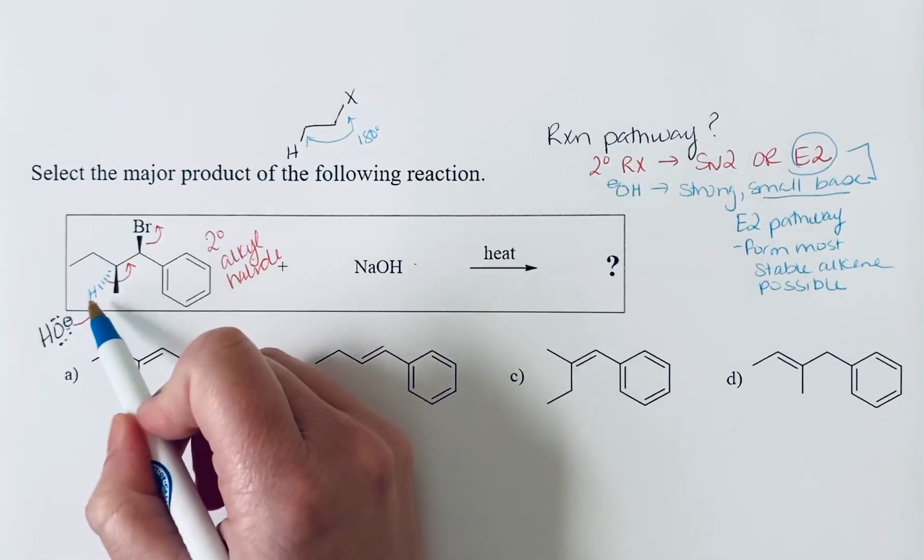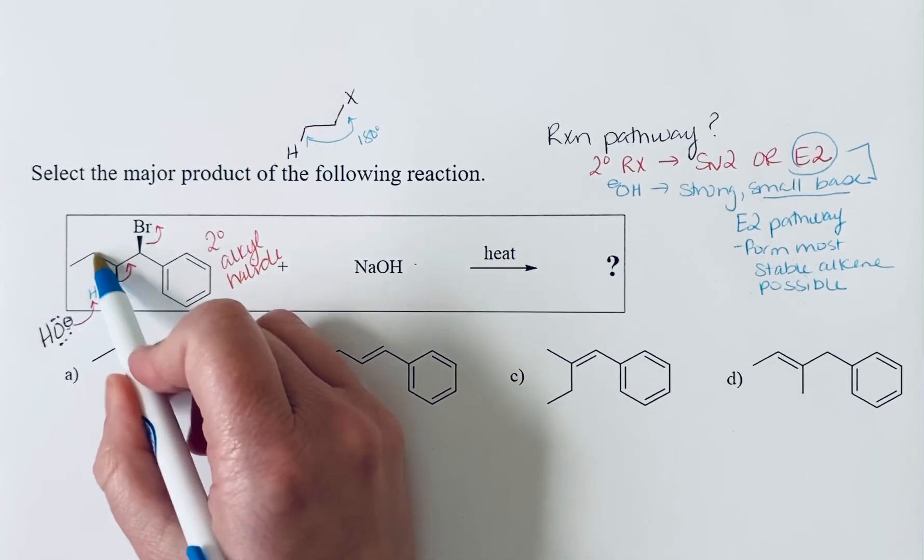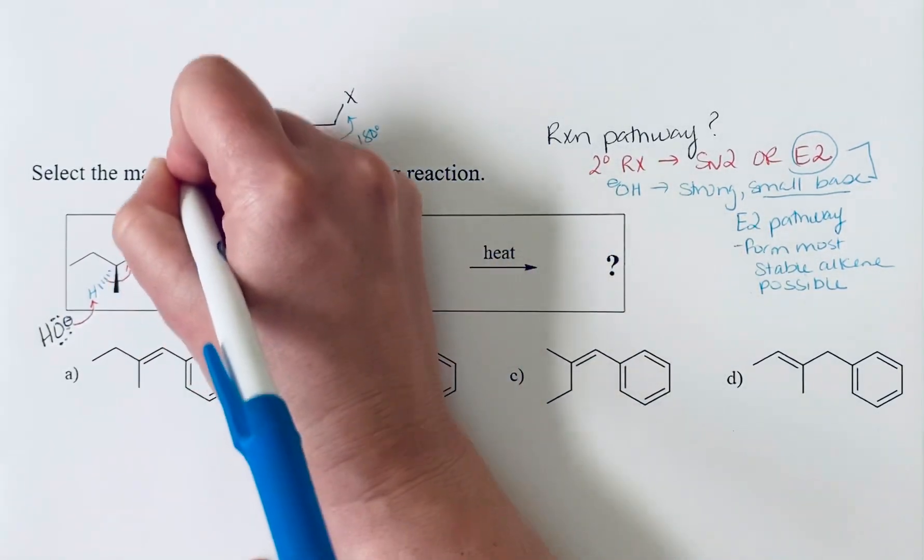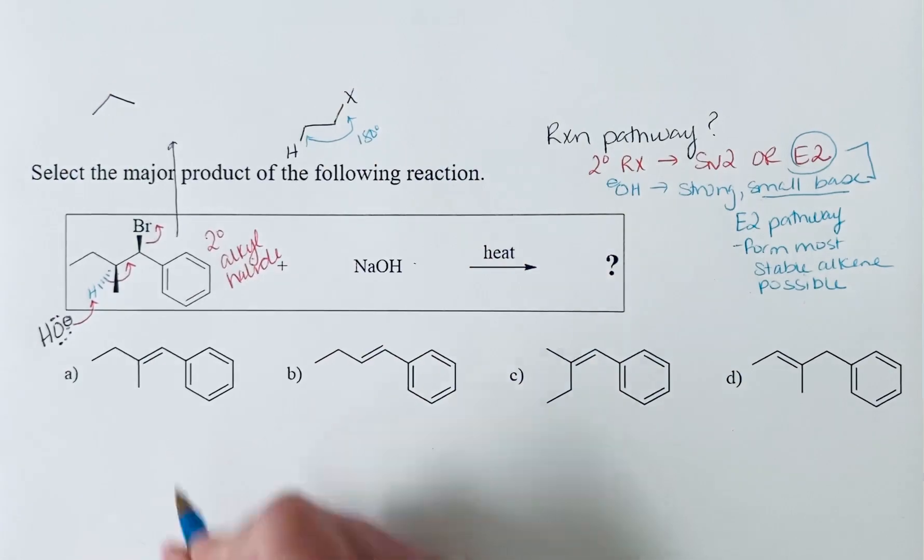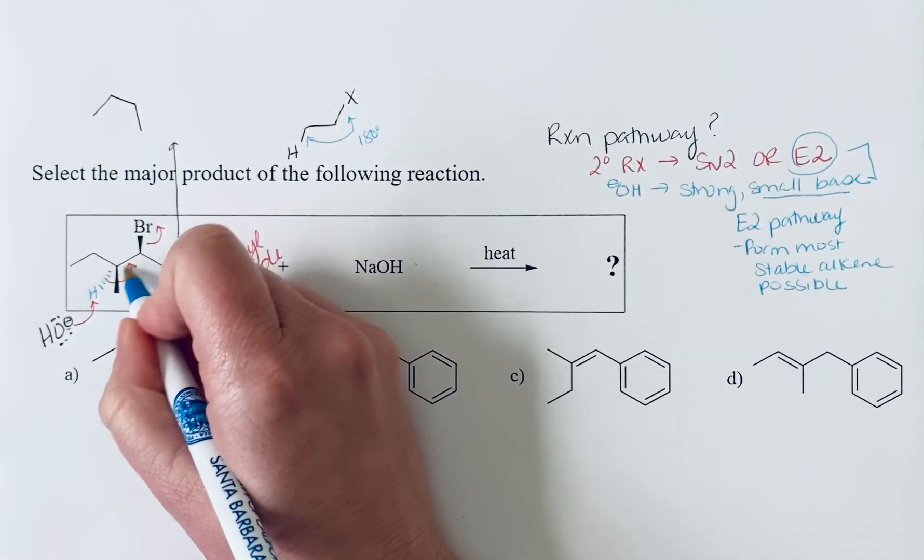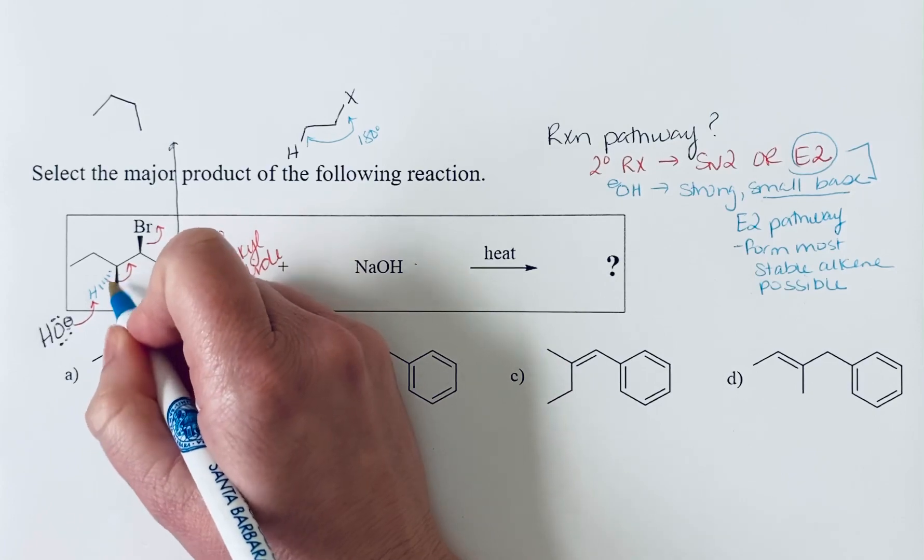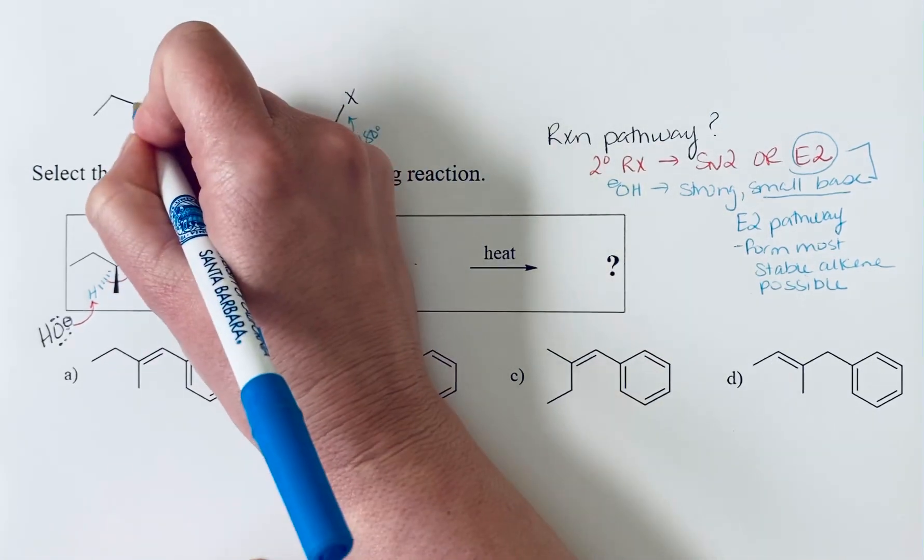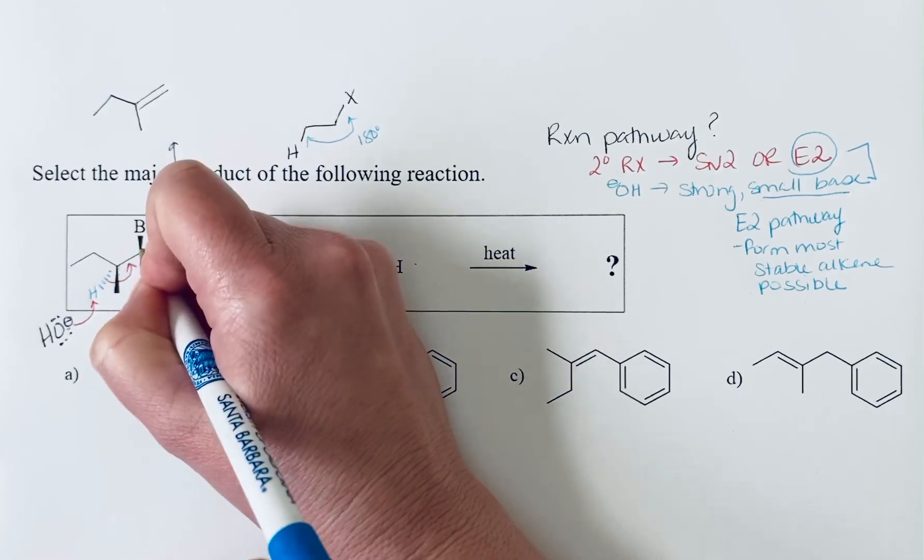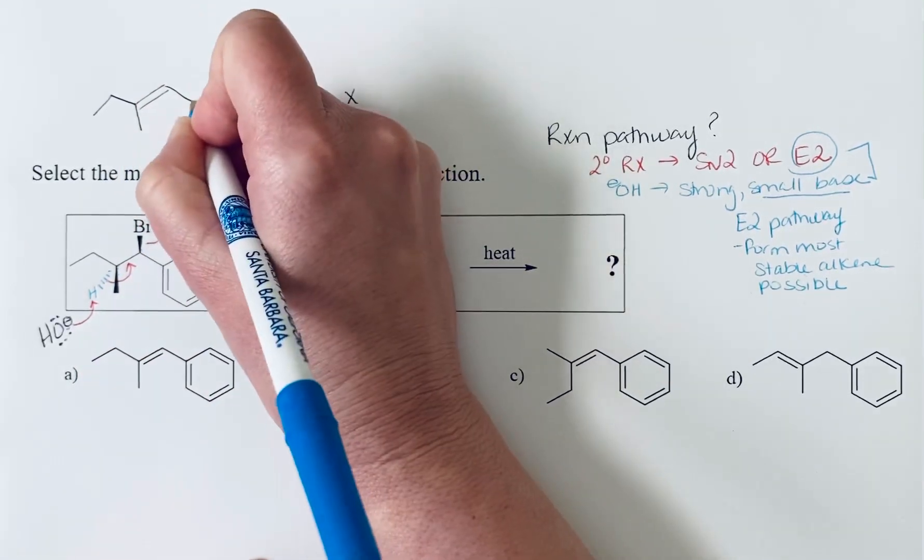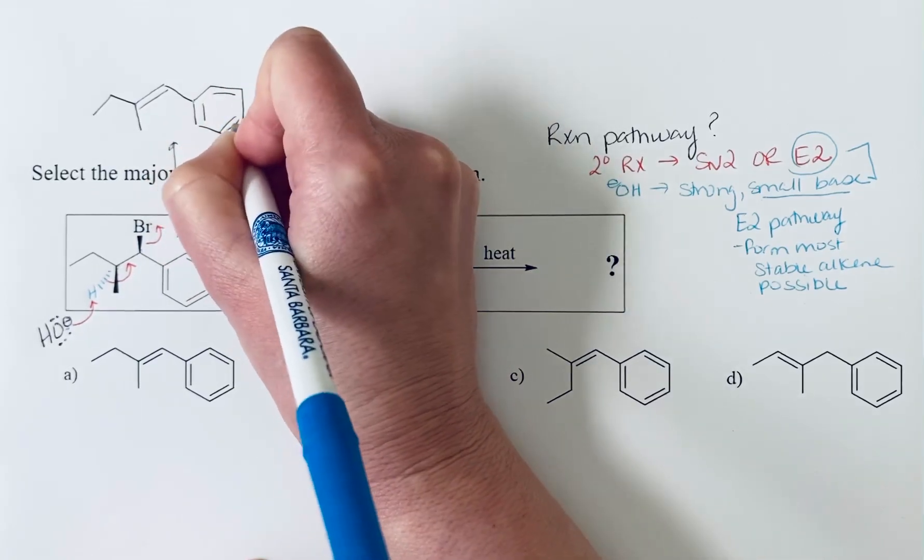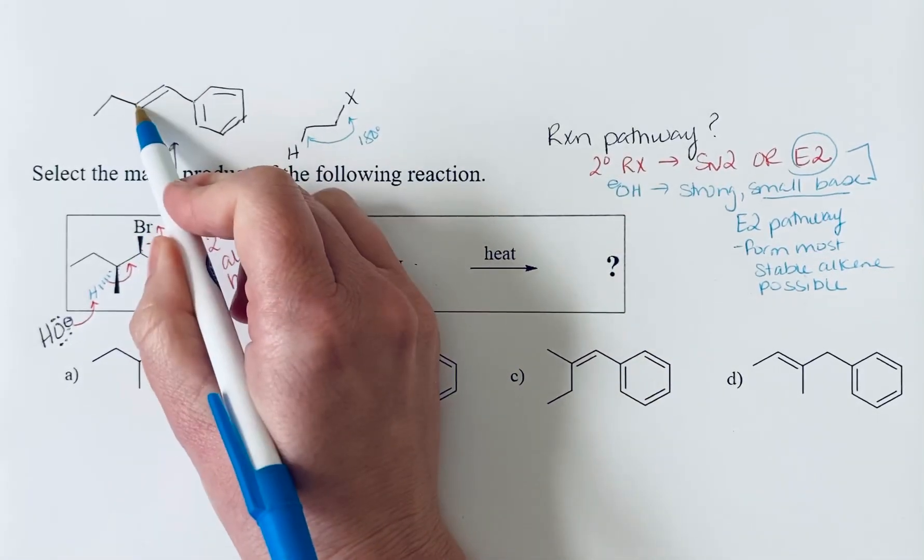And so the product that we will get - the easiest way to draw would be to redraw this framework. So we have the ethyl group, the methyl group was sticking down. It's becoming sp2 hybridized so I'm not going to show it with a wedge - it should be planar. We'll have an alkene right in between these two carbon atoms and then a bond to the phenyl ring. So we have formed this trisubstituted alkene that's conjugated with the benzene ring, so fairly stable.